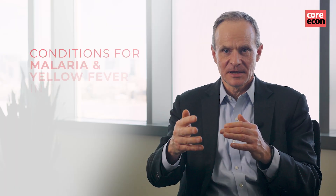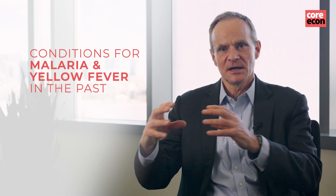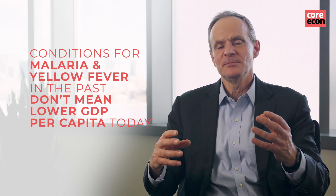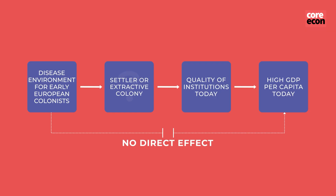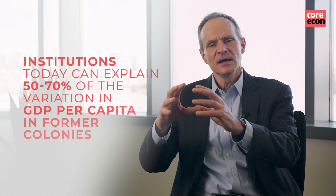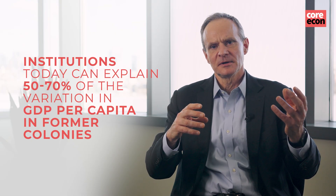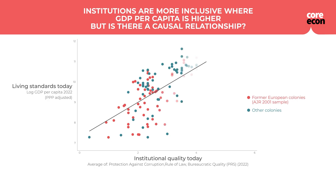Colonization strategy had a big effect on the institutions that were established. Tropical diseases — including malaria and yellow fever — that were so burdensome on Europeans historically are not a major or significant factor on GDP per capita in most countries today. So if we look within the sample of former European colonies, we know for sure that institutions today can explain between 50% and 70% of the variation in GDP per capita. The amount of variation you have in former European colonies is very close to what we see for all countries, including those that were never colonized by Europeans.